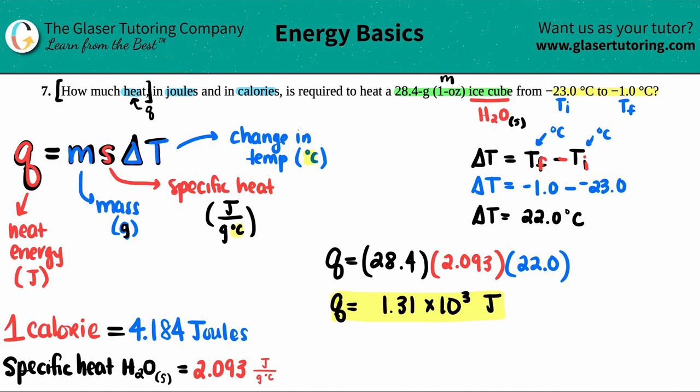Now let's just convert this into calories. So I have 1.31 times 10 to the third joules. Remember, whenever we're converting we just multiply by a ratio. The unit that we don't want—in this case joules—goes on the opposite side, so that's the bottom, and the calories is the top number. Here is the conversion: one calorie for every 4.184 joules.